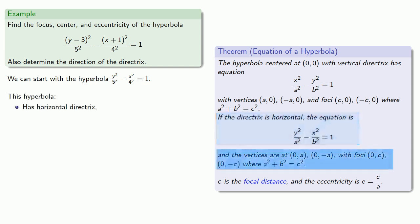The vertices are at (0,a), the denominator of the y² term, and (0,-a), and foci at (0,c) and (0,-c), where a² + b² = c².